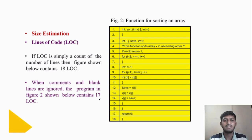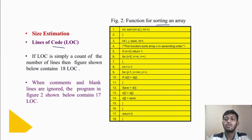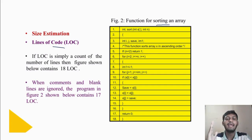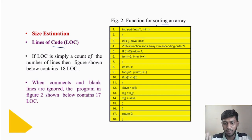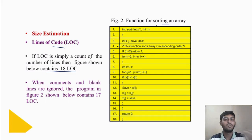Looking at the image shown, there is a function that sorts an array. If LOC is simply a count of the number of lines, then the figure shown contains 18 LOC. When comments and blank lines are ignored, the program contains 17 LOC. Whether comments are counted depends on your software company's standards.